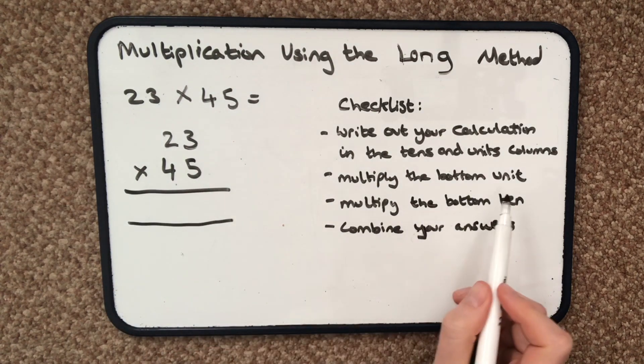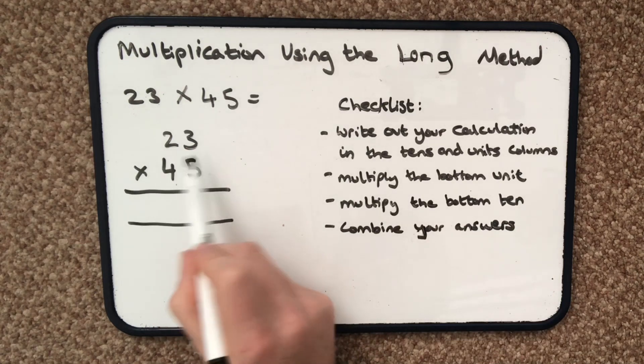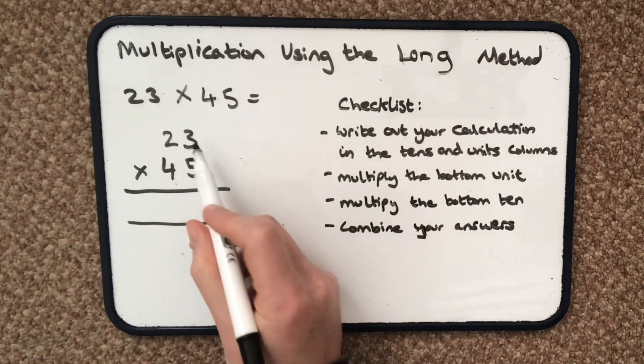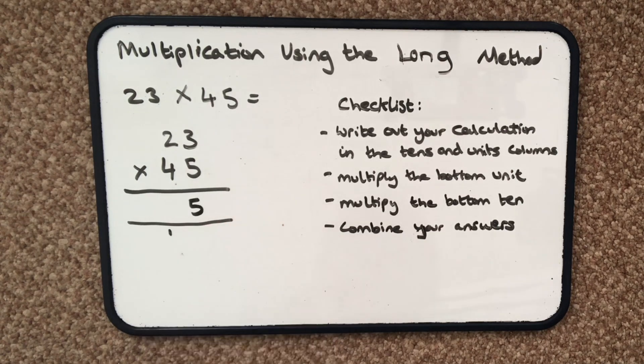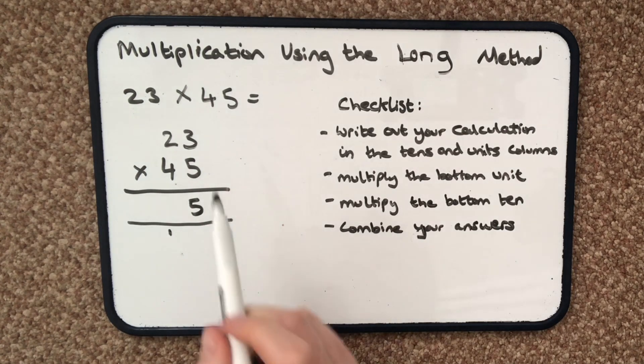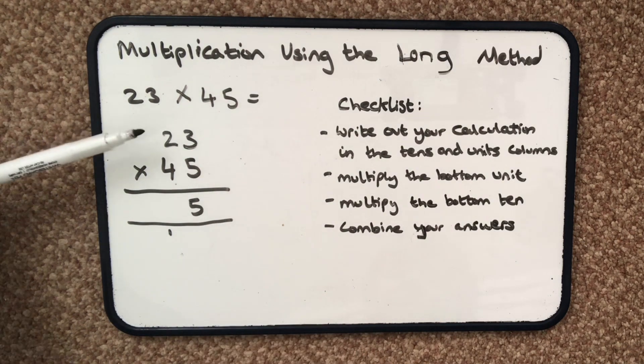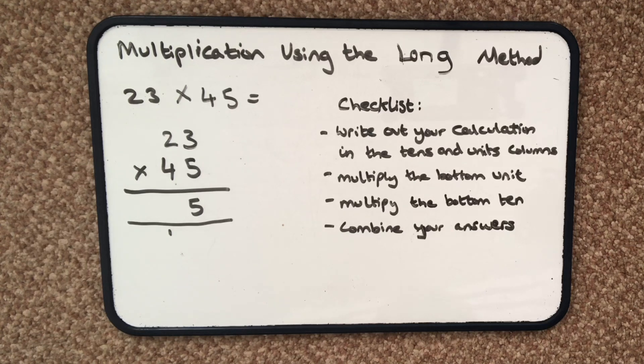I then multiply the bottom unit by both of the top numbers. So 5 times 3 units is 15 and I'm going to carry that 10 into the tens column. Some people like to carry the tens up at the top, some at the bottom. I find it easier at the bottom. You can do whichever one you prefer.